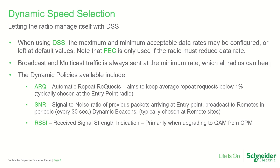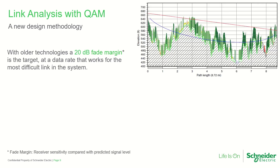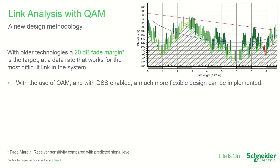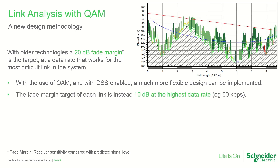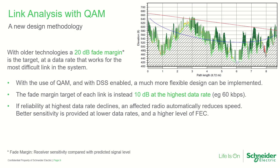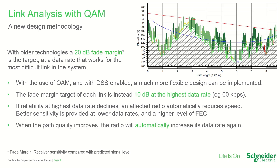Each radio in a system may use a different policy and may operate at different data rates as required by changing local conditions. In a traditional system analysis, a 20 dB fade margin is the target at a data rate that provides the required receiver sensitivity for the most difficult link. With QAM and DSS enabled, a much more flexible design can be implemented — the fade margin target of each link is instead 10 dB at the highest configured data rate. If a link's reliability at the highest data rate declines, an affected radio automatically reduces speed, with better received sensitivity at lower data rates and a higher level of FEC potentially coming into play. When path quality improves, each radio can choose to automatically increase its data rate again.